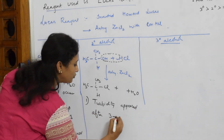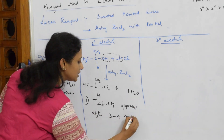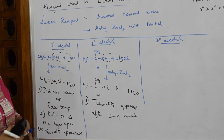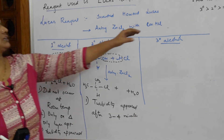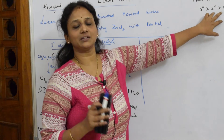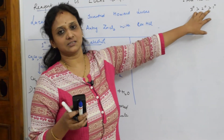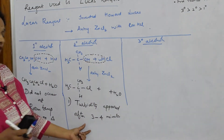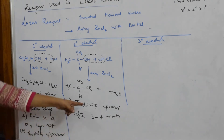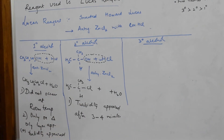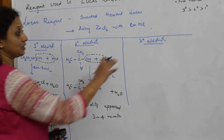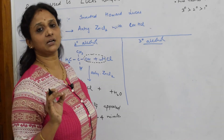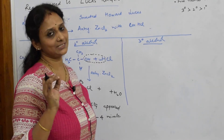With secondary alcohol, turbidity appeared after three to four minutes, because secondary carbocation is more stable than primary. So a product formed, but it took three to four minutes for the turbidity or oily layer to appear.